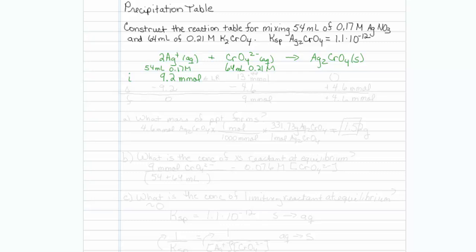We have 64 mls, and it is 0.21 molar for the chromate. Let us do the same thing with 64 times 0.21. That comes out to be 13.44 millimoles. But very irritatingly, this is only good to 2 sig figs, so we will just write 13 millimoles, and 0 here.